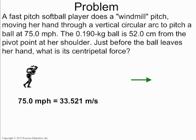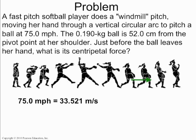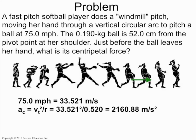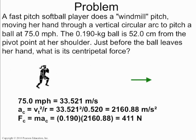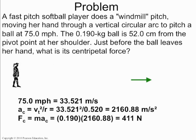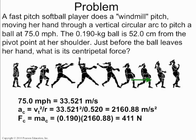Going through the solution: first convert 75 miles per hour to meters per second — keeping in mind that a mile is 1,609 meters and an hour is 3,600 seconds — giving 33.521 m/s. Then A_C = V_T²/R, and plugging in gives 2,160.88 m/s². Then F_C = MA_C, and putting in our values, we end up with 411 newtons — the centripetal force on the ball directed towards the center of the circle. At the moment of release, the ball flies off in a tangent.